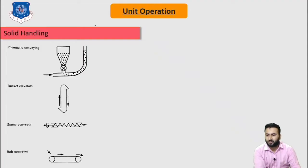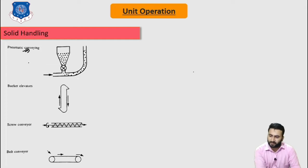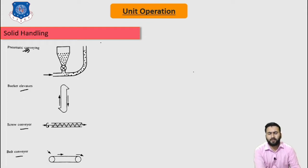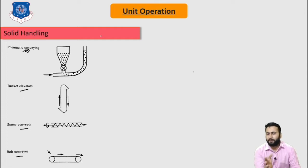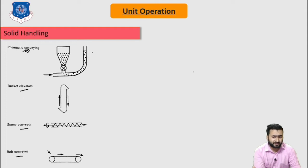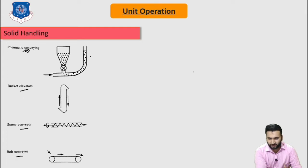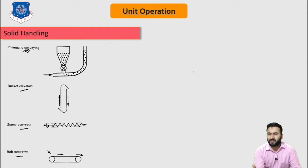Let's discuss the solid handling process and solid handling equipment. These include pneumatic conveyors, bucket elevators, screw conveyors, and belt conveyors. Pneumatic conveyors were originally used for grain and are now widely used for cement, catalyst, cork, and powdered chemicals — used for the handling and transportation of solid materials and particles.